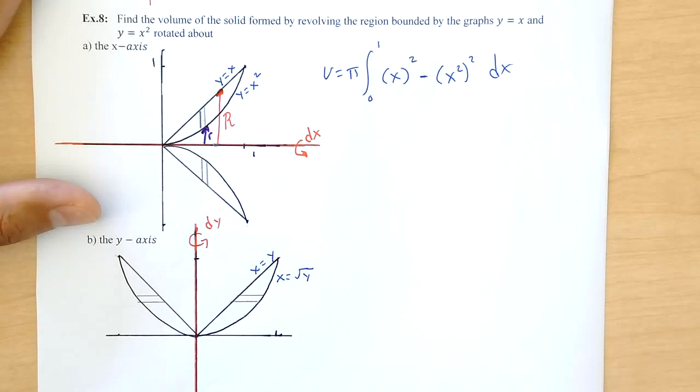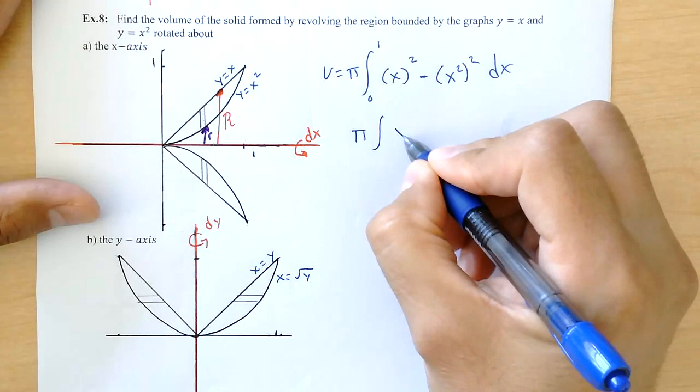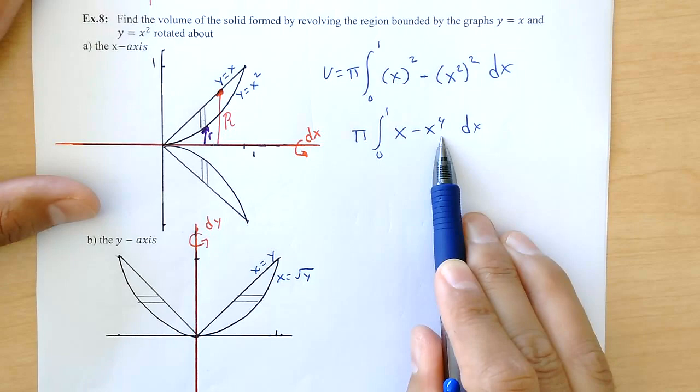Again, pi big R squared minus little r squared. And when I simplify that, I need to be able to integrate that. I know that's an easy integral. We should all be able to do that.